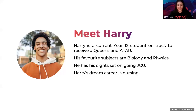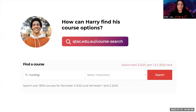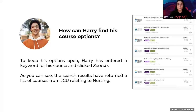We're now going to meet Harry. Harry's a current Year 12 student on track to receive a Queensland ATAR. His favourite subjects are biology and physics and he has his sights set on going to JCU. His dream career is in nursing. Harry wants to start by finding a course, so the first thing he's going to do is head to the QTAC website and go to the course search. Harry wants to keep his options open, so when he searched he just typed in 'nursing' and hit search.